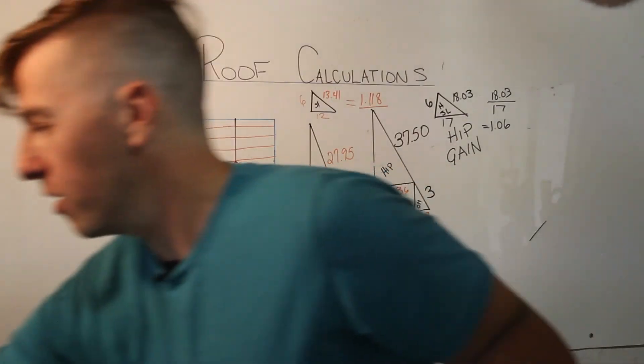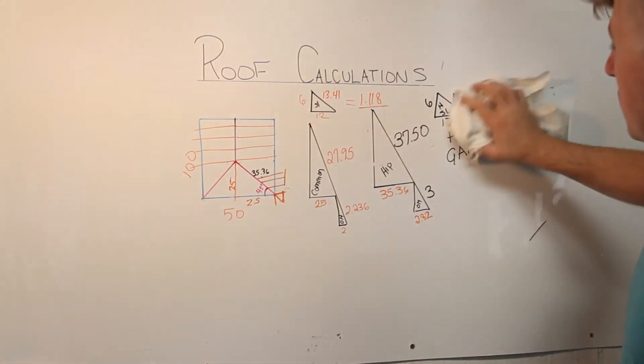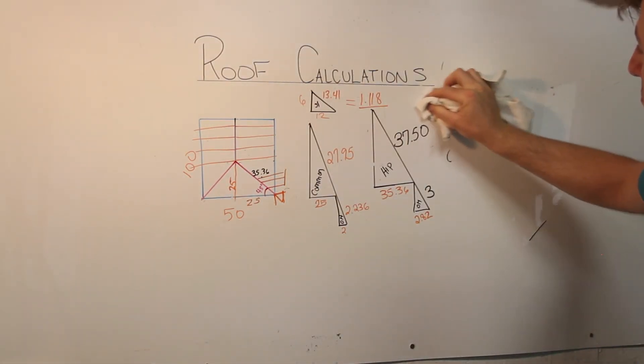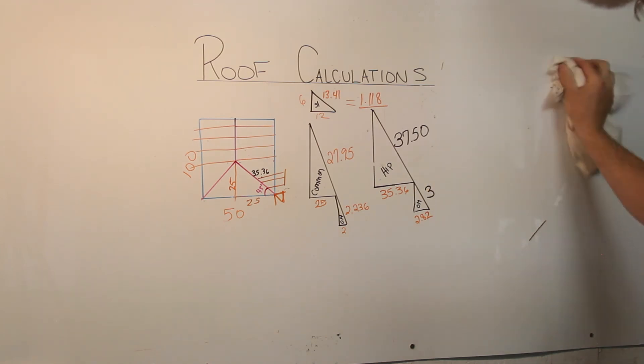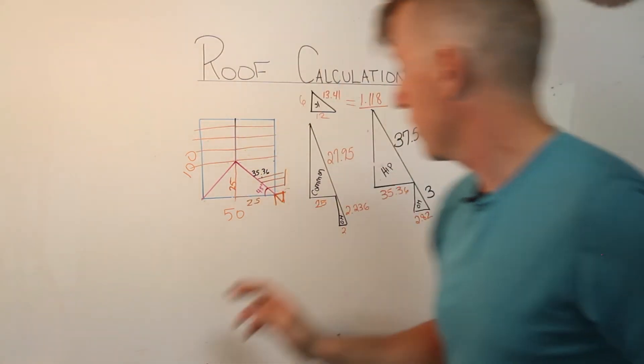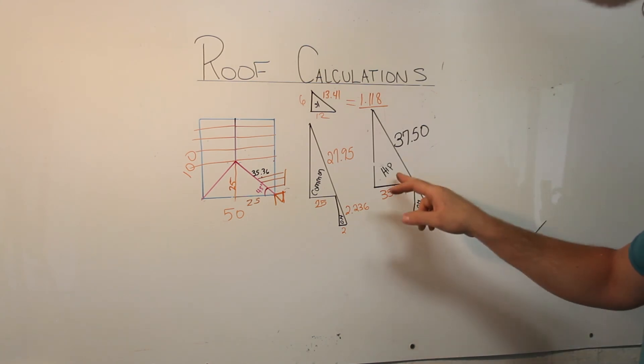So with a relatively small number of calculations, we've been able to solve the common rafter lengths, the overhang, the hip rafter lengths, as well as the overhang.